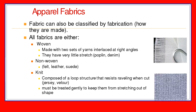Woven fabrics are stronger, while knitted fabrics provide more stretch and shape because of the looping construction.